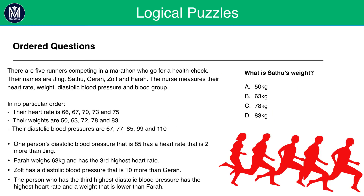Let's have a look at an example now. There are five runners competing in the marathon who go for a health check. Their names are Jing, Satu, Jiran, Zolt and Farah. The nurse measures their heart rate, weight, diastolic blood pressure and blood group. Have a go at this question by finding out Satu's weight.